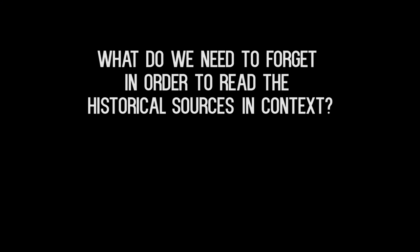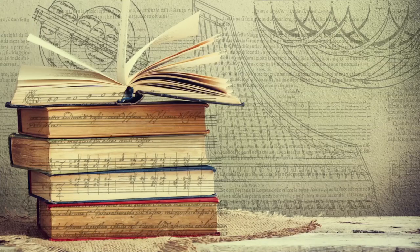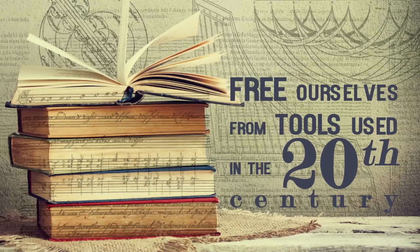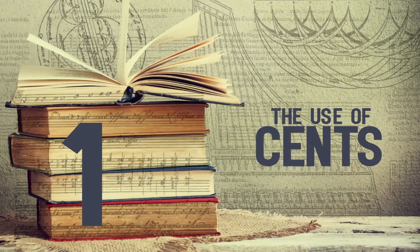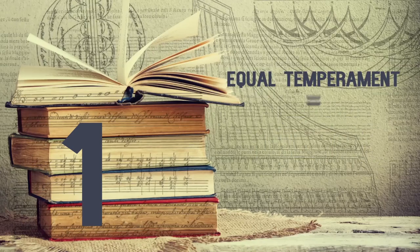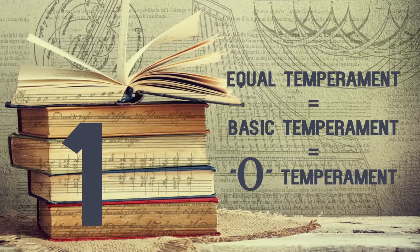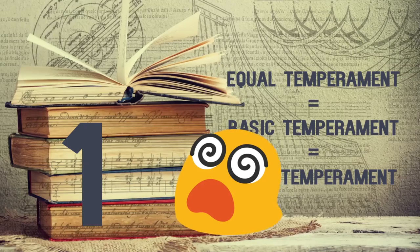Before we start, here are some things we need to forget before reading the old sources. In order to get a fresh perspective on the historical sources, we should first free ourselves from tools used in the 20th century. First: the use of cents. Cents are based on a world where equal temperament is the basic temperament — zero temperament, if you like. Apart from being anachronistic, it is highly irrelevant and confusing when dealing with Renaissance temperament.